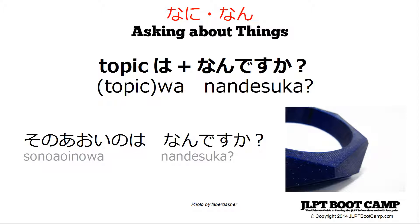Just like 'dare,' it has the same sentence pattern: some kind of topic, 'wa,' 'nan desu ka' — what is this thing? This is very commonly used with 'kore wa' or 'sore wa.' You can also use it in more complicated ways. For example, 'sono aoi no wa nan desu ka' — what is this blue thing? 'Aoi' is blue, 'no' is a nominalizer making it a noun, 'wa' is the topic marker. So you're asking about this particular topic: what is this blue thing?